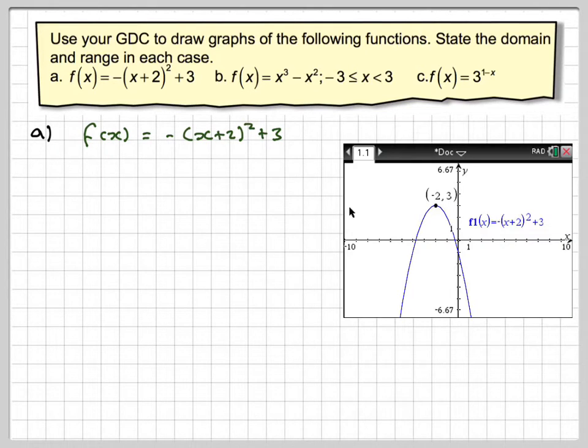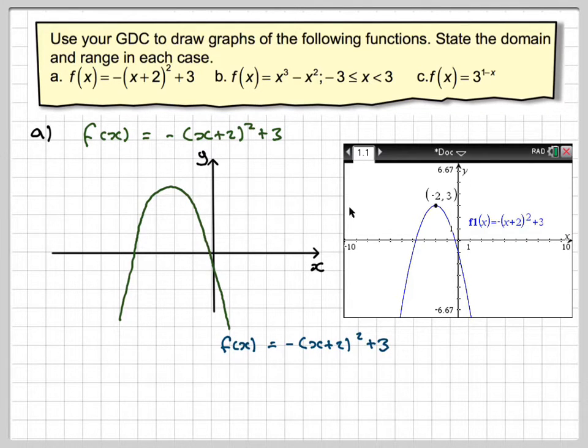what we've got to look for is maximum and minimums when we're doing this sort of thing. We need to just sketch a graph. So a set of axes, x and y, drawn with a ruler, reasonably large. Draw on our curve. Label it. f(x) is -(x + 2)² + 3. Mark on the coordinates of that point, which is -2, 3.